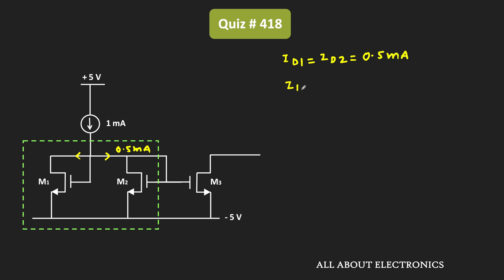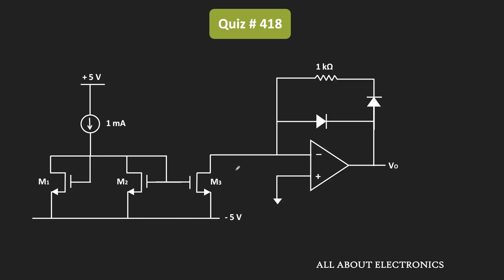Since ID2 equals ID3, this means ID3 is also equal to 0.5 mA. Now that we have this current, we can find the output voltage of the op-amp. Since the op-amp is ideal, no current flows into its terminals. Therefore, to satisfy KCL at this node, this current must also equal 0.5 mA.